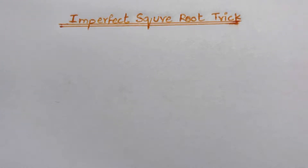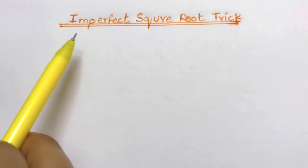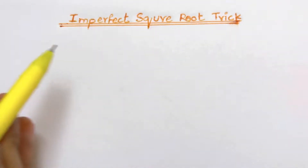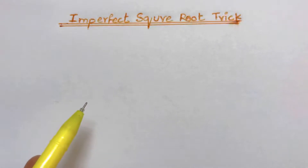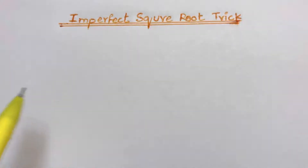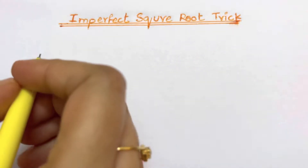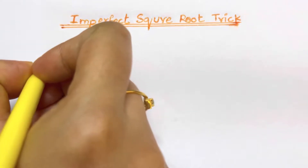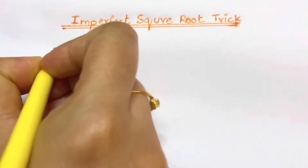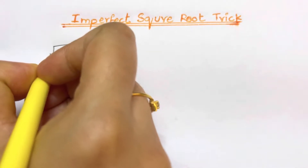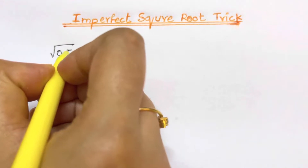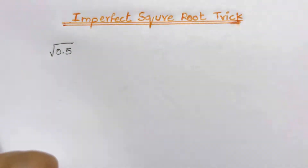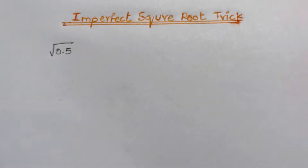Hi everyone. In our previous video we solved some square roots of imperfect numbers. Now in this video we are going to find out the square root of a decimal number — for example, square root of 0.5. How would you solve that easily?